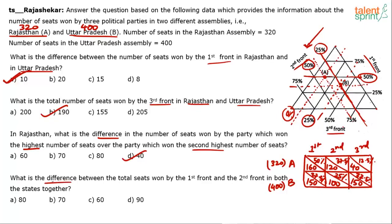Final question: What is the difference between total seats won by the First Front and the Second Front in both states together? Total of First Front in both states = 160 + 150 = 310. Total of Second Front in both states = 120 + 100 = 220. Difference = 310 − 220 = 90. Option D is the answer.